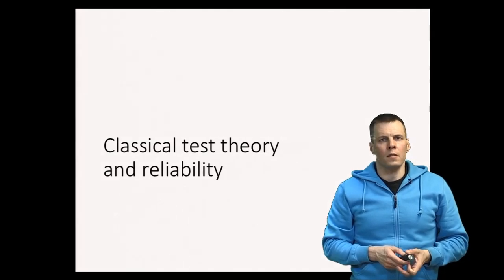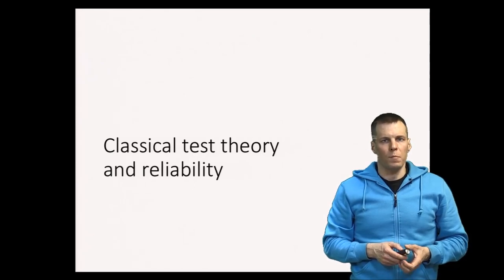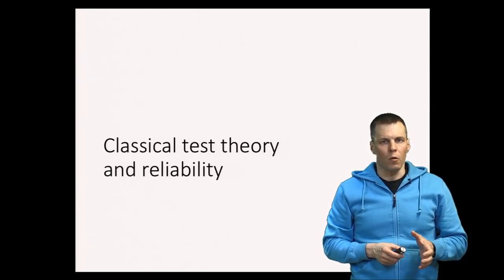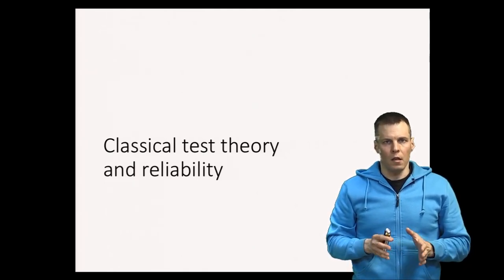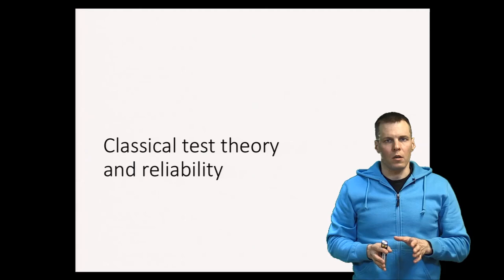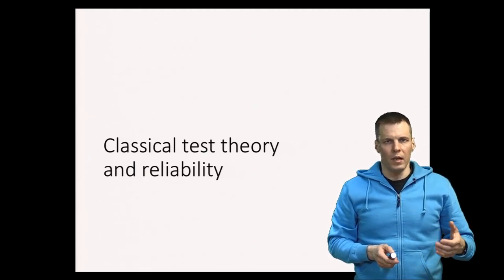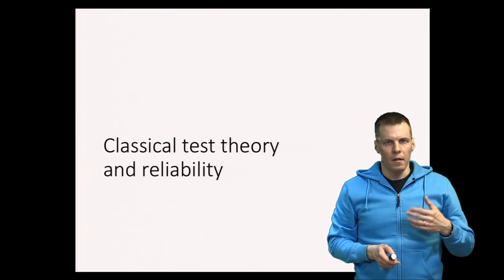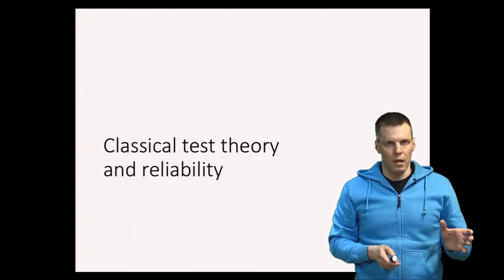The most common way of assessing reliability in social science research originates from psychology and more specifically, it's based on something called classical test theory. Understanding the basics of this theory is important because it makes some assumptions that you must make for your reliability indices to be valid. Now we're going to be looking at what classical test theory says about reliability and what kind of assumptions it makes.